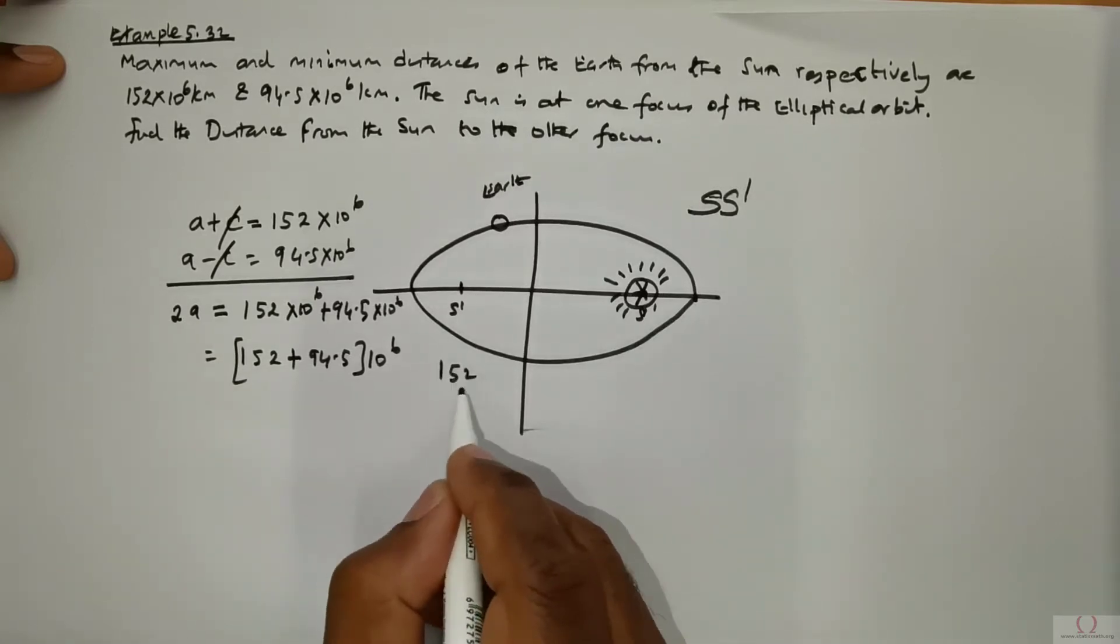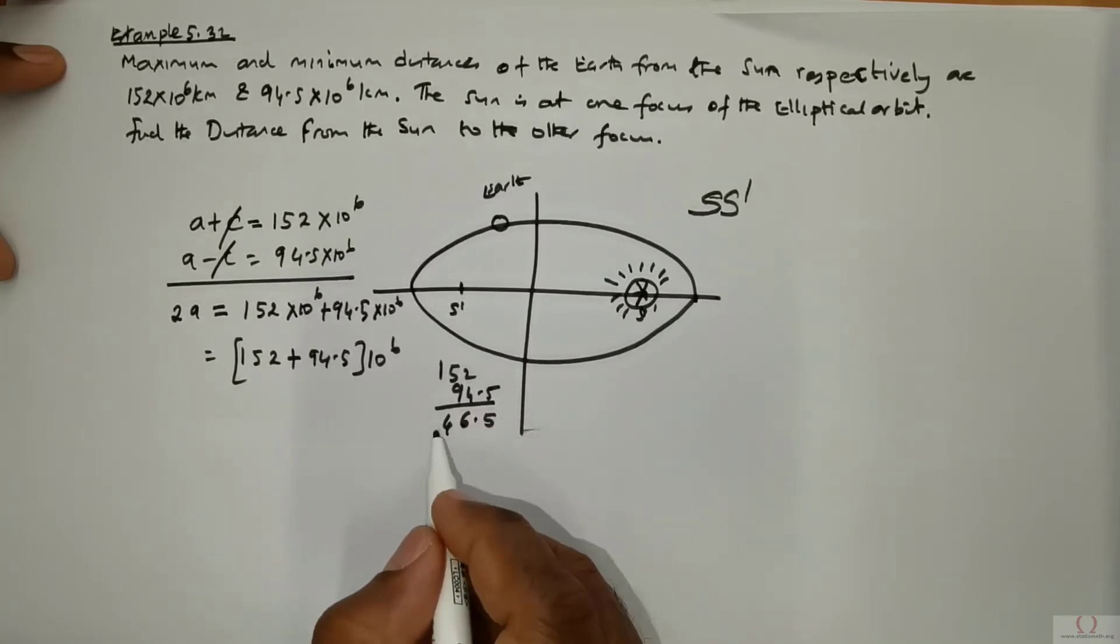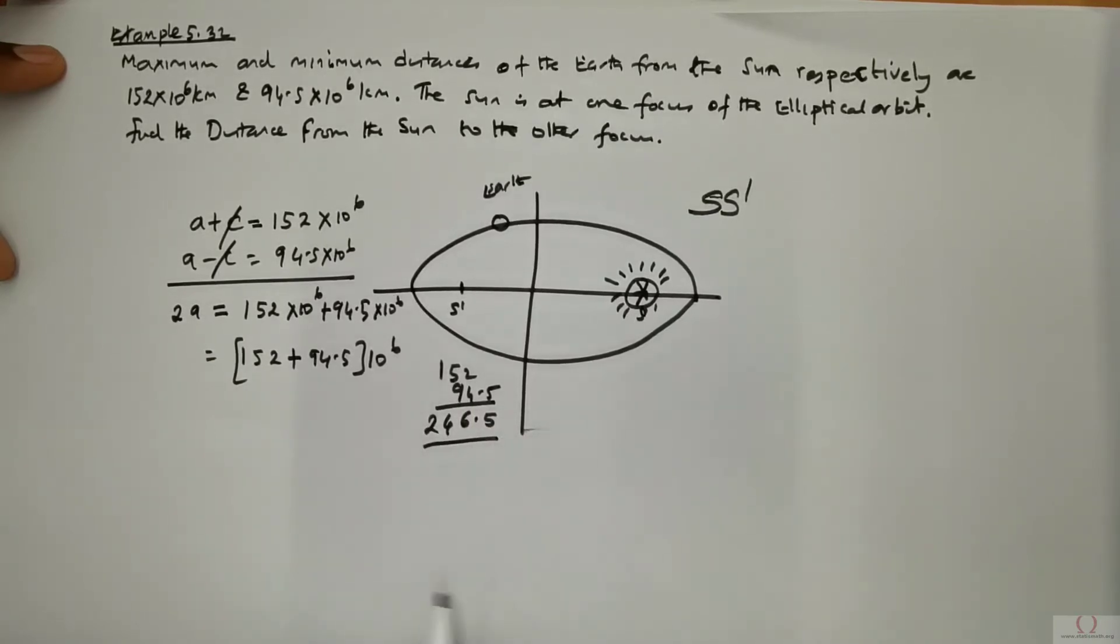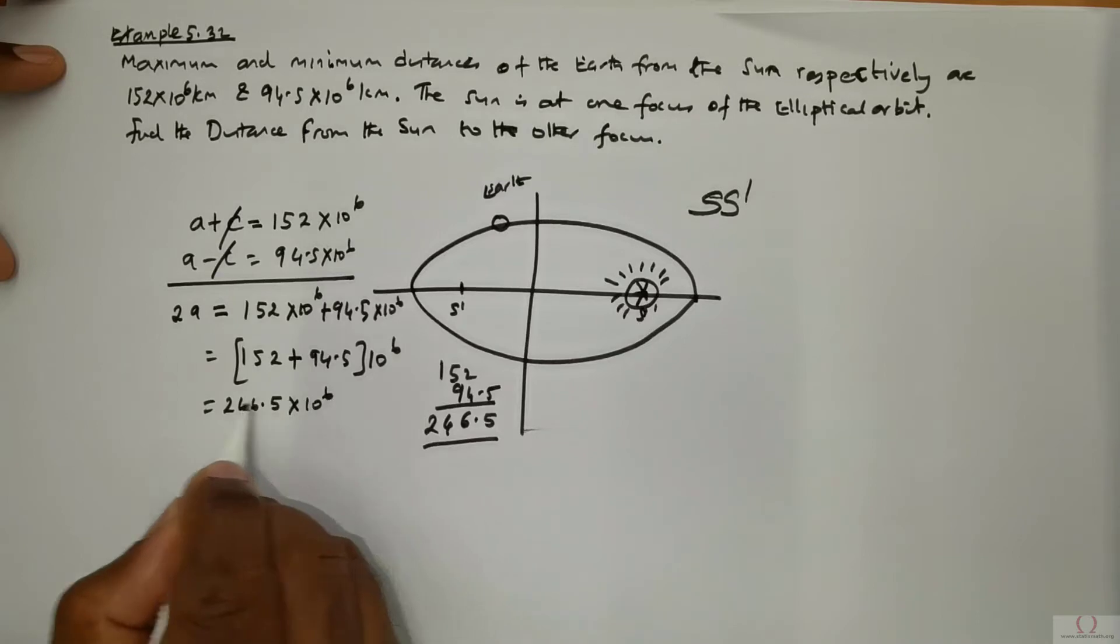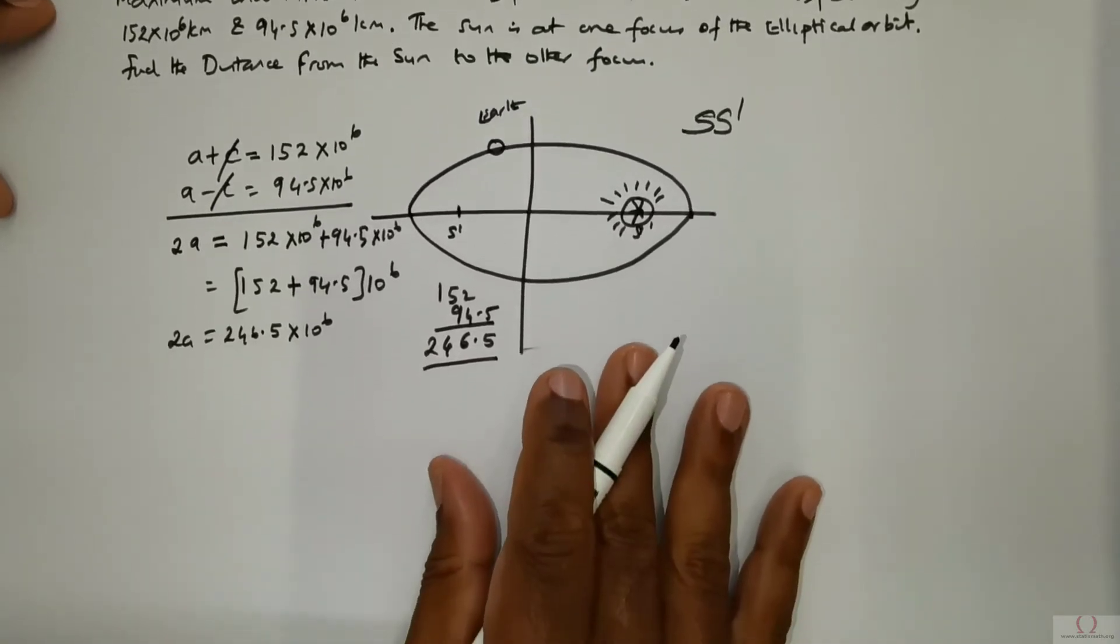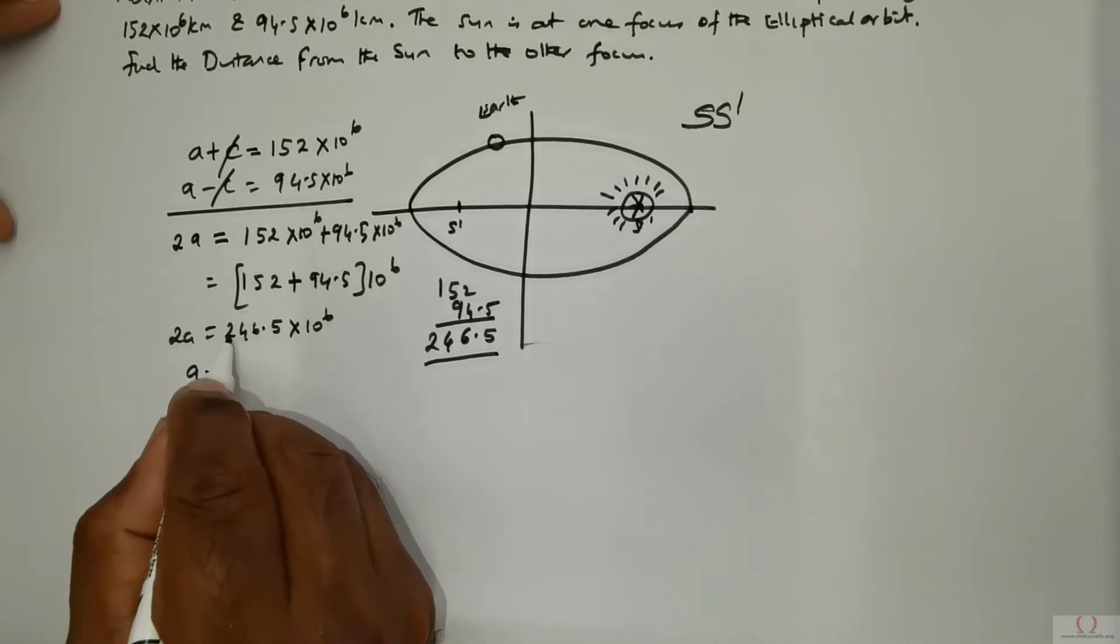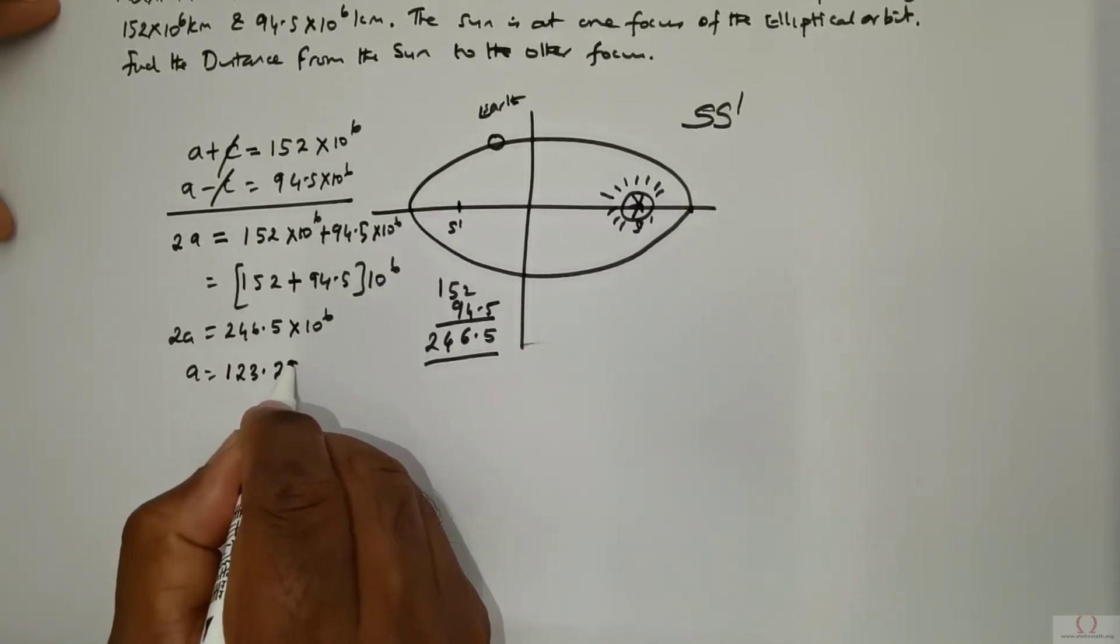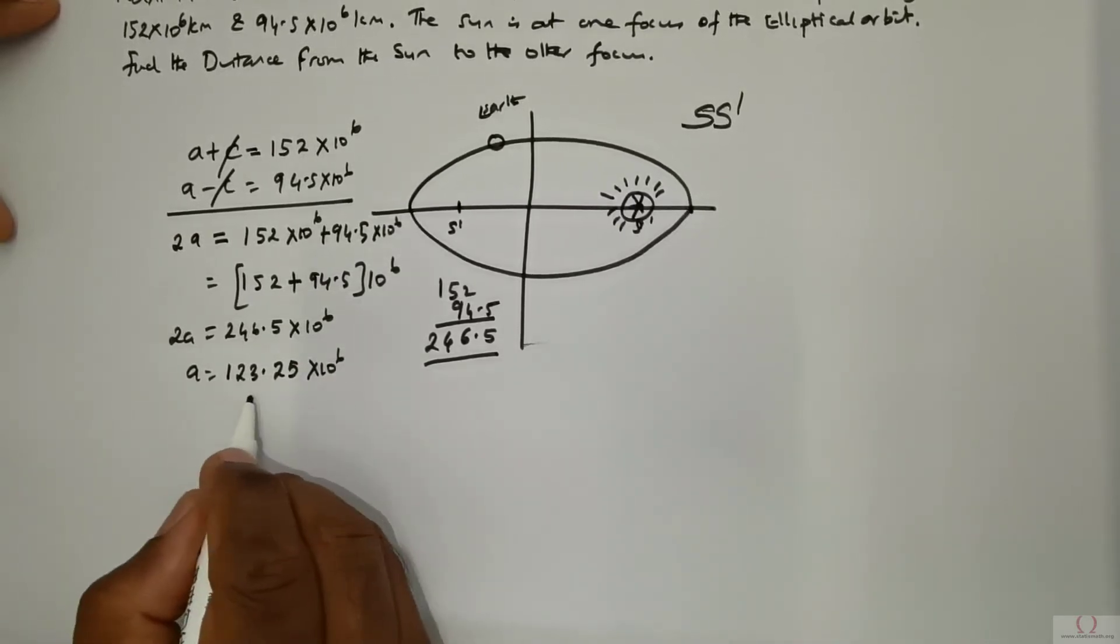I can add 152 with 94.5 that will give me 246.5 times 10 to the power 6 is 2a. So the value of a is going to be 123.25 times 10 to the power 6. So this is the value of a.